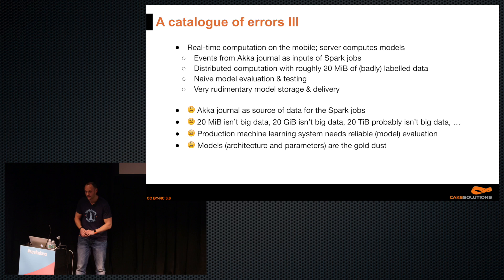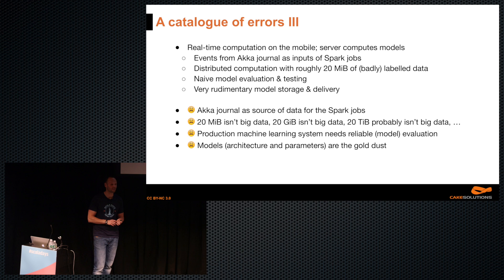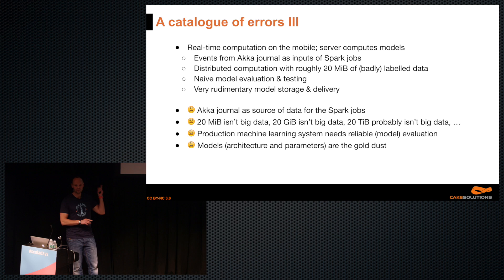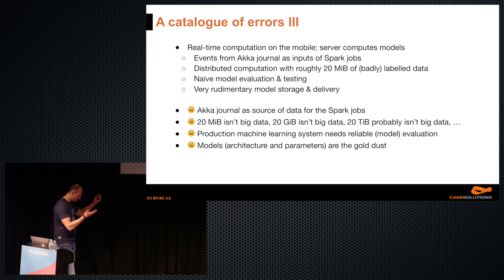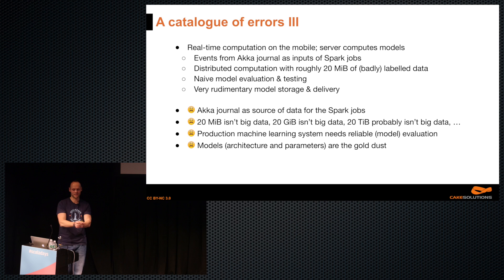You can wire in better serializers, which we did, but it's still not ideal. Crucially: 20 megabytes isn't big data, 20 gigabytes isn't big data, 20 terabytes probably is — that's when you should start getting interested in it; everything else will fit in memory. We learned that production machine learning models need a reliable way of model evaluation, model storage, and training data management. The models delivered to the mobile app are still roughly 10 megabytes of floating-point numbers — having the right 10 megabytes is the gold dust.